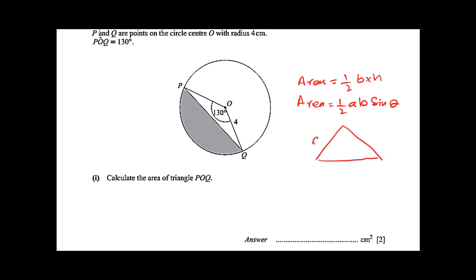Now, we have two sides given and included angle given, so 1 over 2 ab sin θ will apply.